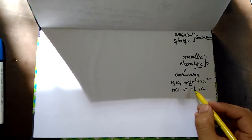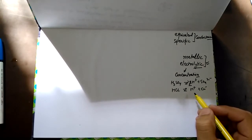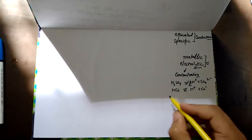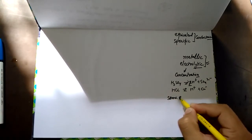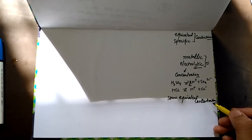If we are to compare the conductivity of two solutions of different electrolytes, it is essential that they must have the same equivalent concentration. When we compare the conductance of two electrolytes under equal equivalent concentration, the conductance of such electrolytes is called equivalent conductance.